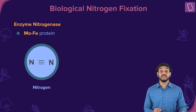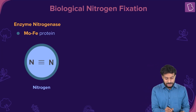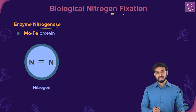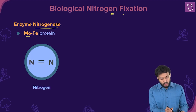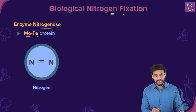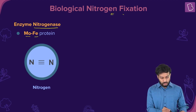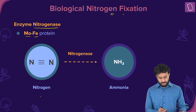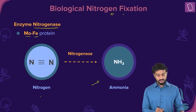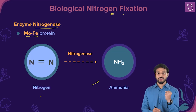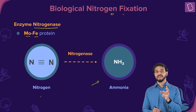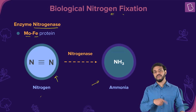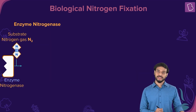The enzyme involved in biological nitrogen fixation is nitrogenase — a MoFe protein. With the help of nitrogenase, nitrogen is converted into ammonia. The enzyme causes the reduction — addition of protons — of the triple bond in N2 to form NH3.